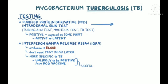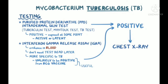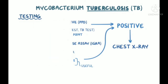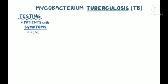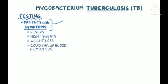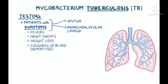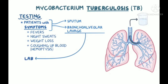After a screening test with PPD or IGRA, anyone with a positive result typically gets a chest x-ray to look for signs of active TB disease. In patients with symptoms like fevers, night sweats, weight loss, and coughing up blood, or hemoptysis, it's important to collect samples from either the sputum or via a bronchoalveolar lavage, where a bronchoscope is inserted through the mouth or nose into the lungs, fluid is squirted in, and then the fluid is collected. These samples are sent to the lab for staining, culture, and PCR to look for evidence of Mycobacterium tuberculosis.